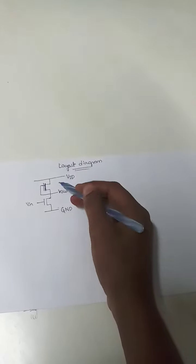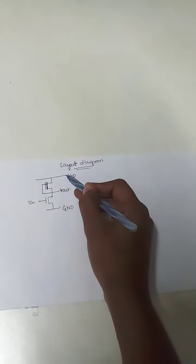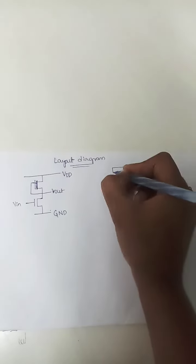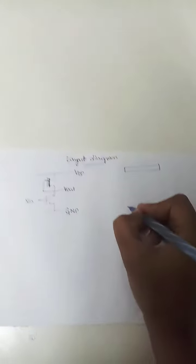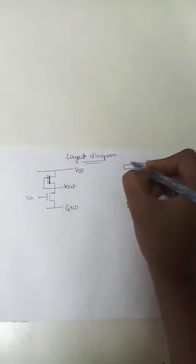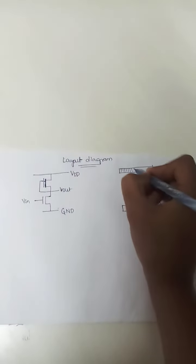For color stick diagram, you will be using metal color blue. Now for layout diagram, you will be representing like this. For metal, you will be representing lines like this.